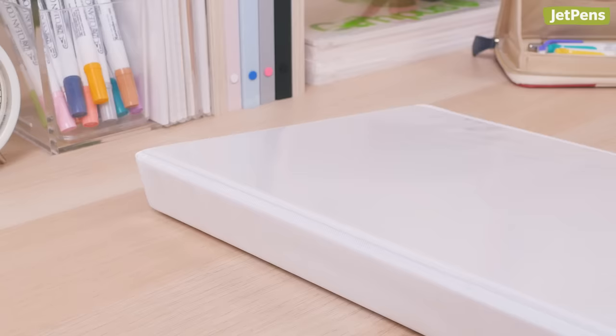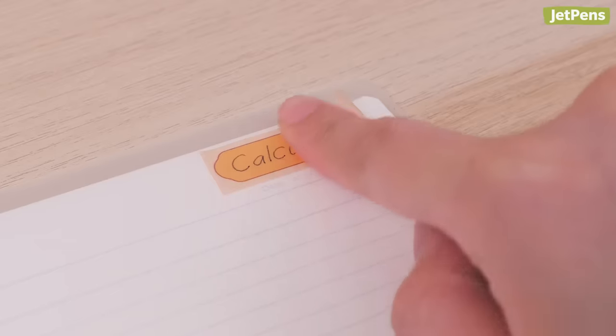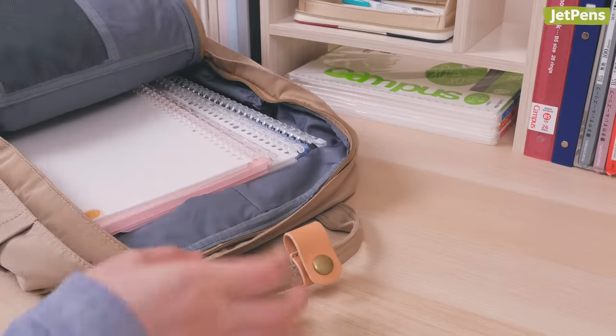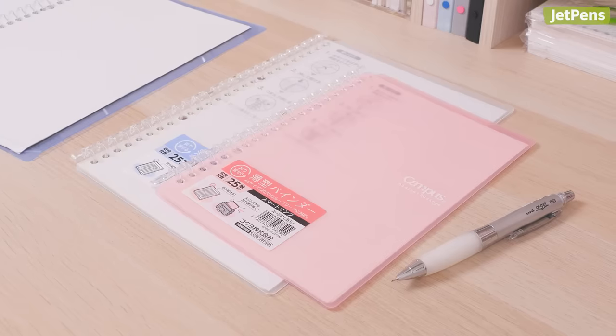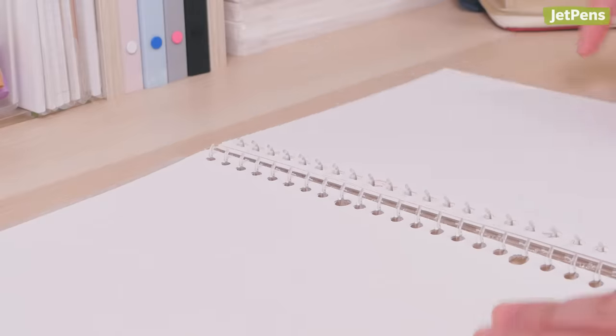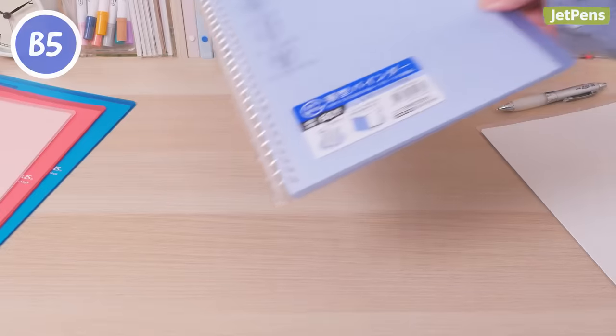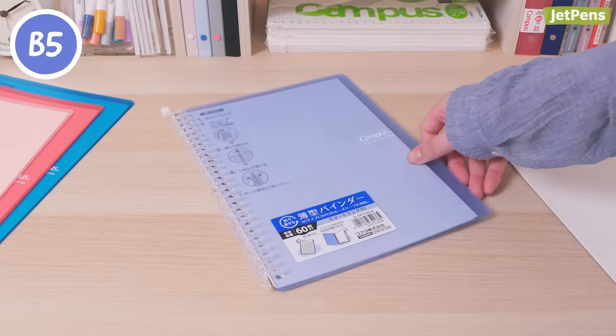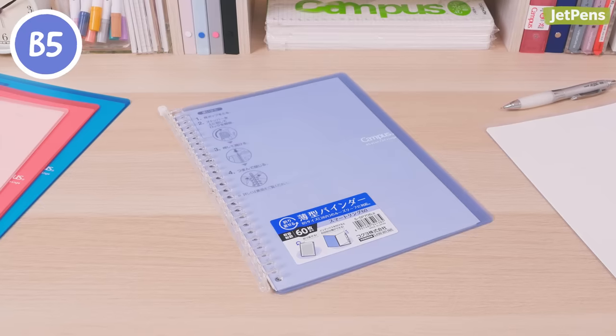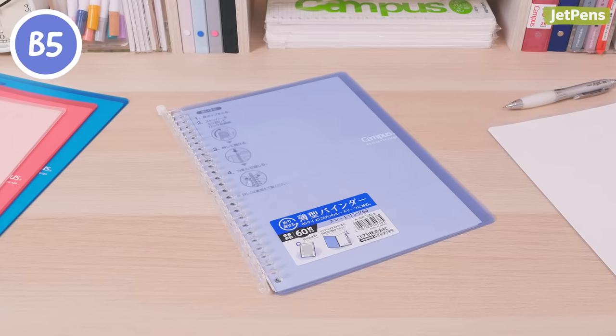Most binders have large rings and are pretty bulky, but the Smart Ring is about as slim as a typical spiral notebook. You can dedicate a notebook to each class without taking up tons of room in your backpack. The standard Smart Ring Binder notebook is available in two sizes, A5 and B5. Both can hold about 25 pages, but the B5 notebook is also available in a version that can hold up to 60 pages. Plus, that one can accommodate index tabs, which I think is pretty cool in a notebook.